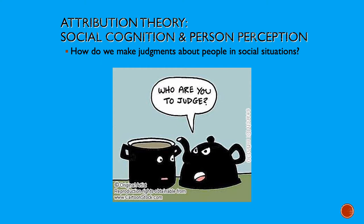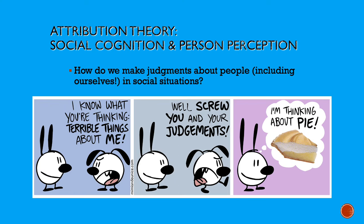How do we make attributions about people in social situations? Whether the judgments we make are accurate or not is not usually the issue. Attribution theorists are interested in how we come to the conclusions that we come to, whether or not we're accurate. Attribution theorists are also not just interested in how we make judgments about others, but how we draw inferences about our own behavior as well.